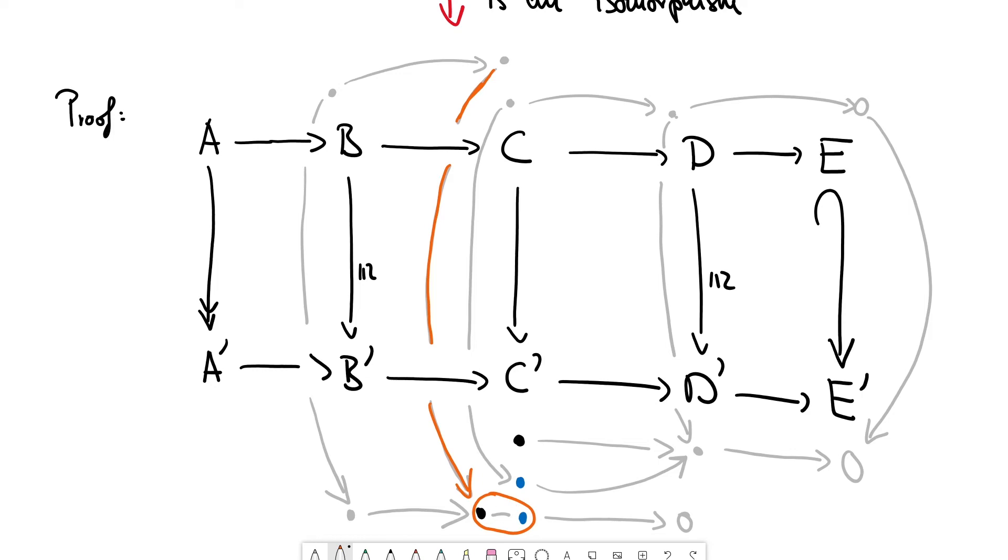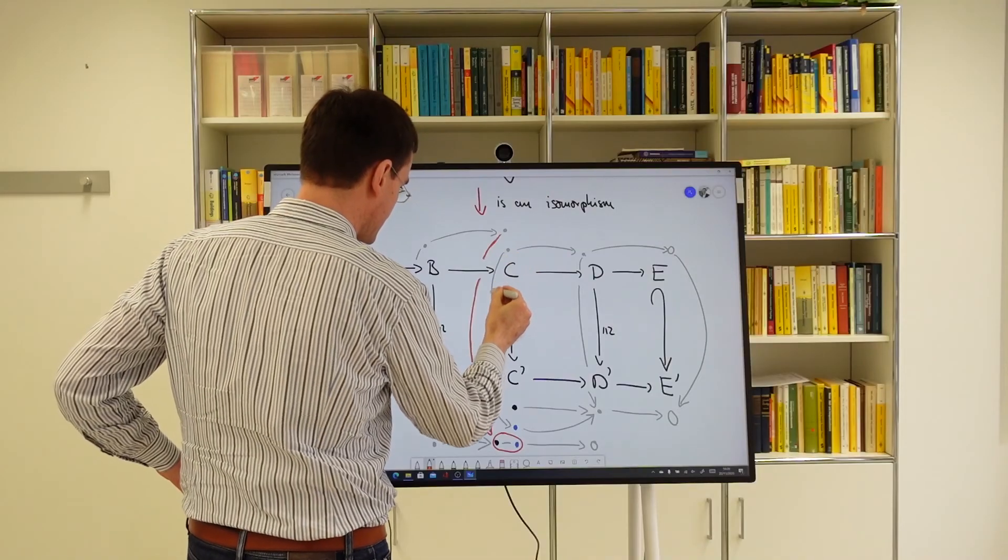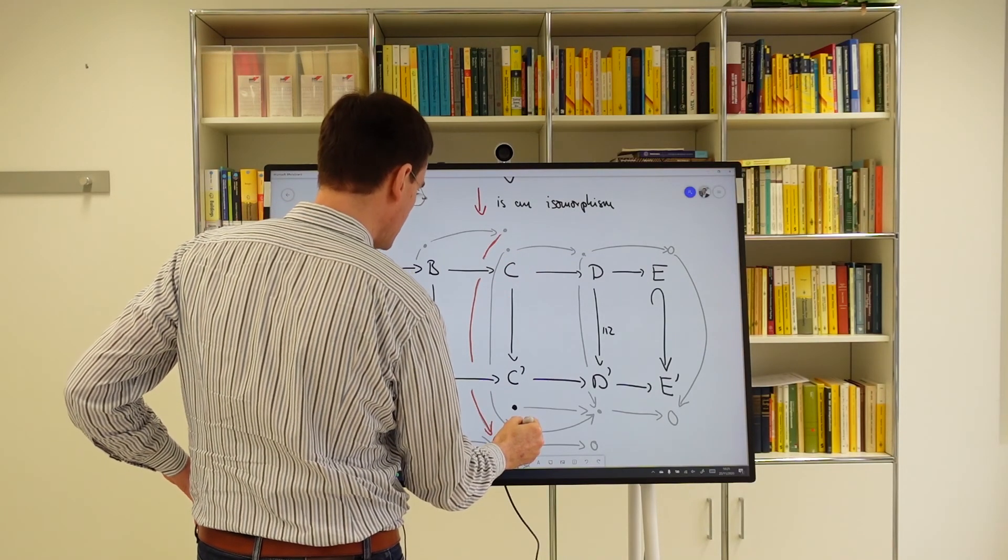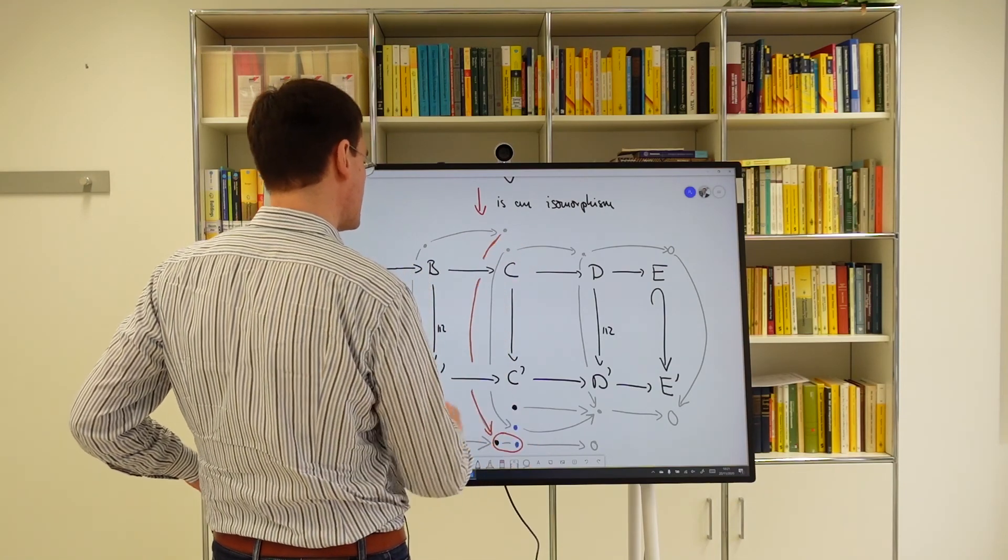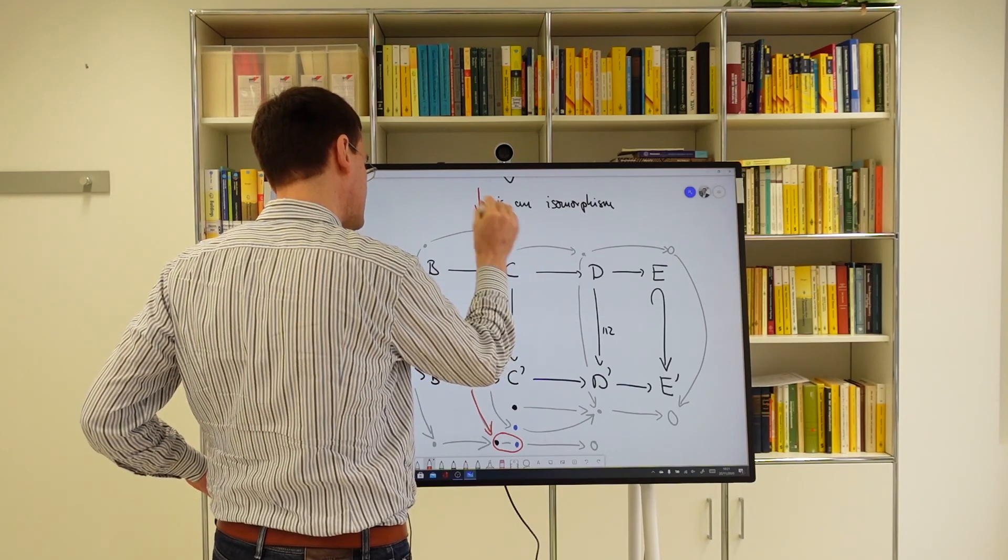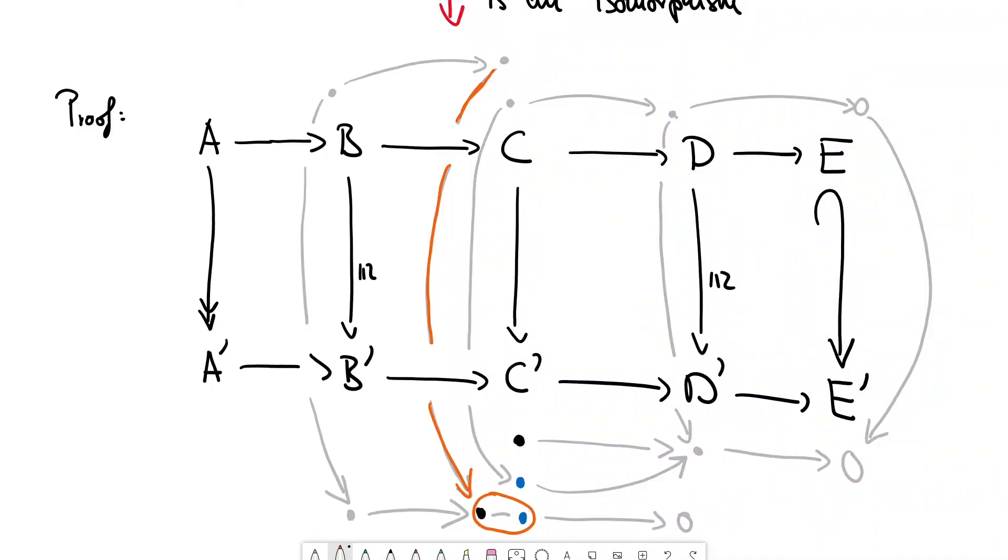But, this sum, the black element, oh, sorry, I made a mistake. This element is mapped to the blue element, and this element is mapped to this difference element. Therefore, if I correct this element by adding this element, so I take the sum of these, this is then mapped to the sum of the difference element and the blue element, and this is the black element.